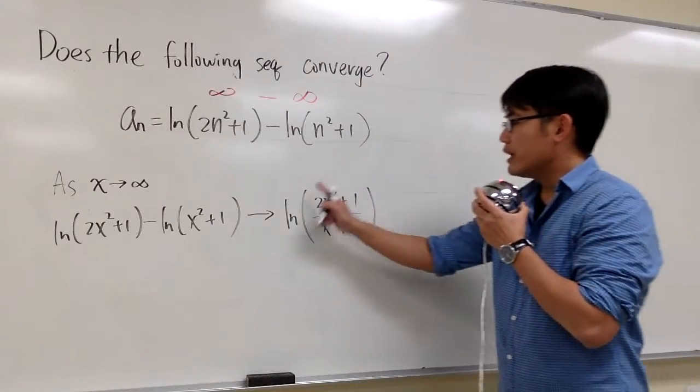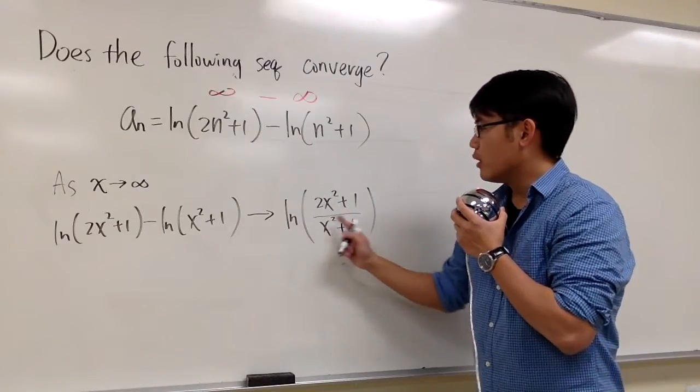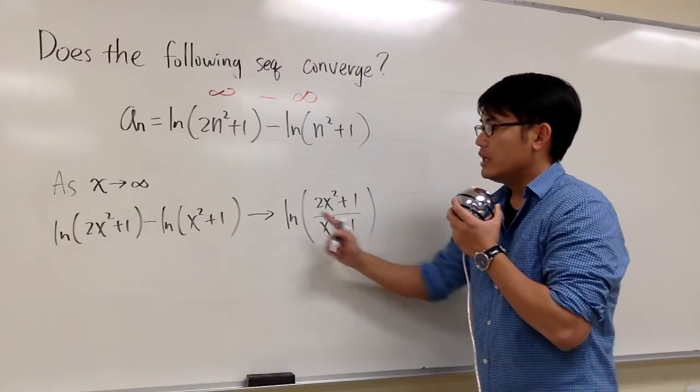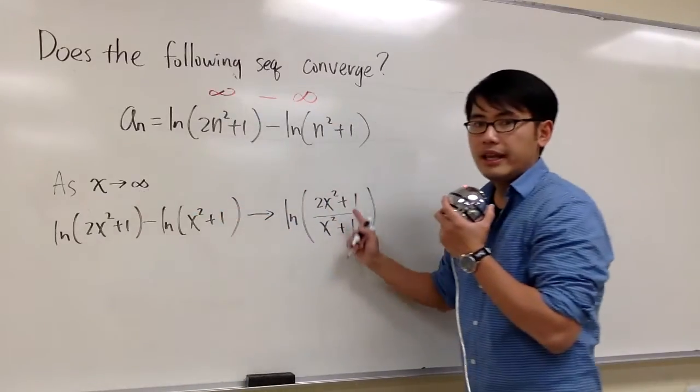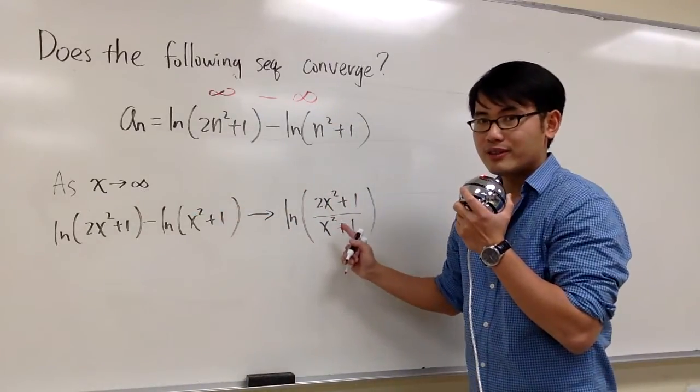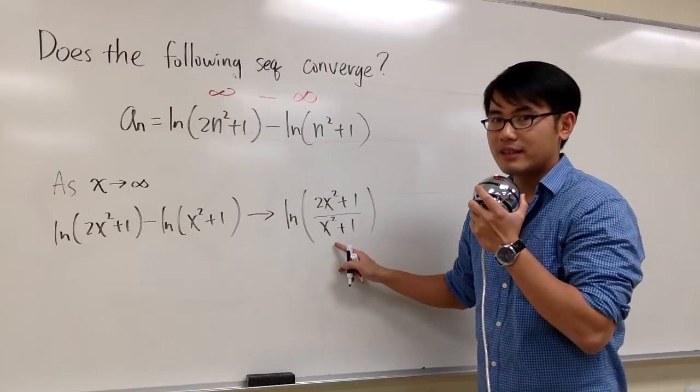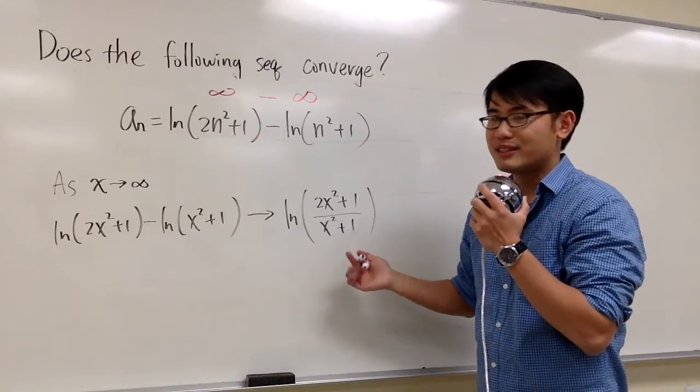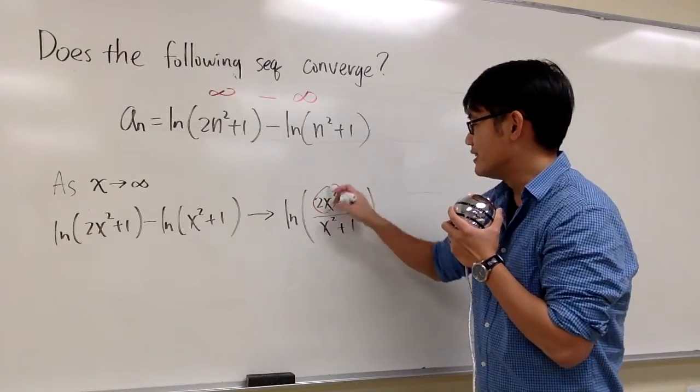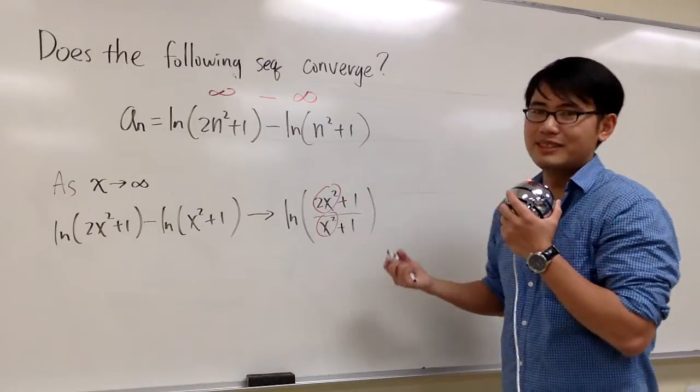And now, if you look at this right here, ln of this thing inside. If x goes to infinity, the inside is a rational function, right? So, we can just look at the highest power of x on the top and the highest power of x on the bottom. Those are the things that matter. So, it's pretty much just this and that. The 1, the 1, doesn't matter.